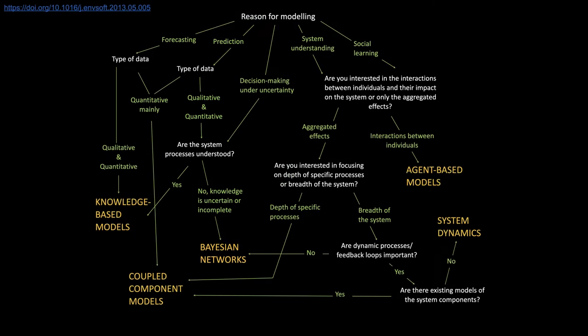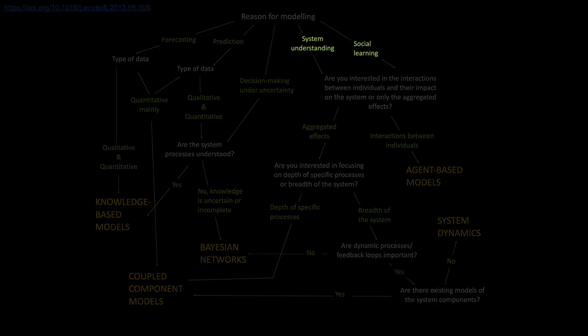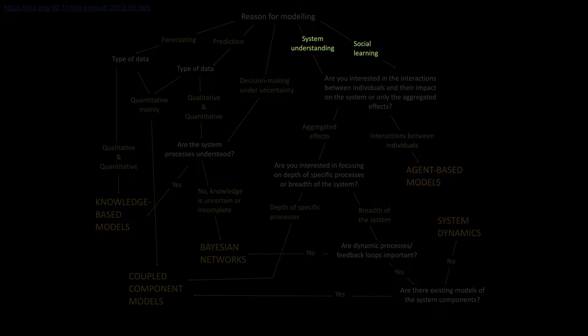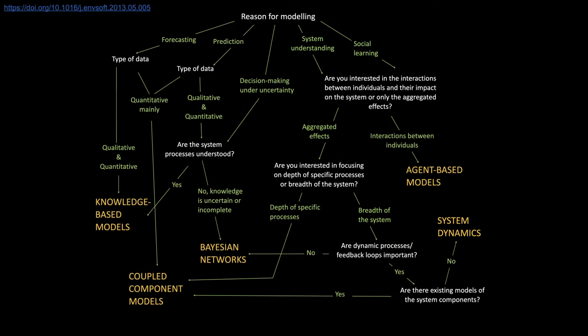If the modelling goal is to enhance system understanding or social learning, and the interest is primarily in individual interactions and their impact on the system, then agent-based models are suitable. But where dynamic processes and feedback loops are important, and the aggregated effects of system behaviour and breadth of the system are of interest, then a system dynamics modelling approach works best. Other decision paths and the relevant approach can be followed from this decision tree. While this tree provides a nice summary of some of the key features of the five approaches and their standard applications, it provides a rather limited view in terms of the approaches considered, their applications and the selection criteria.